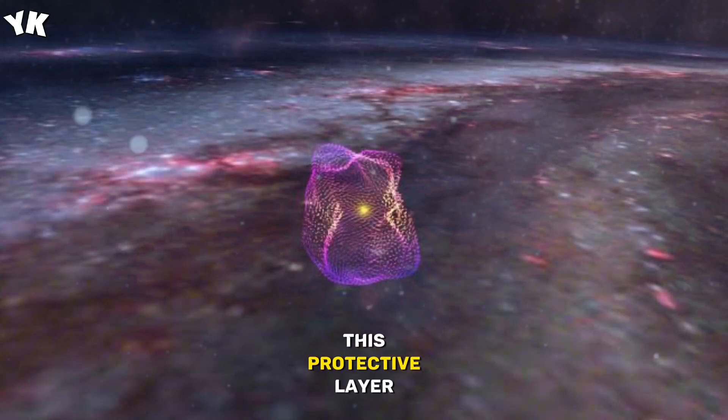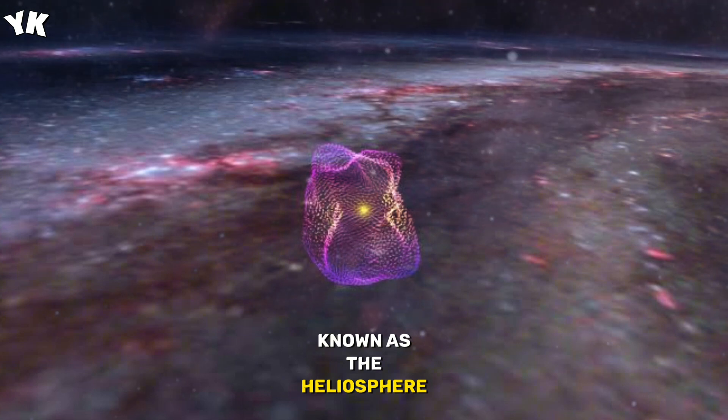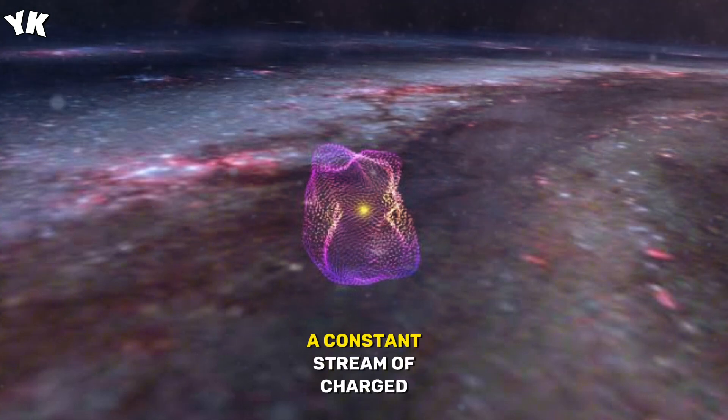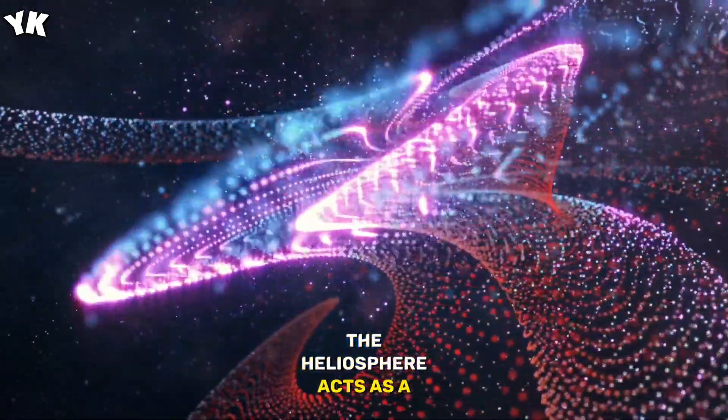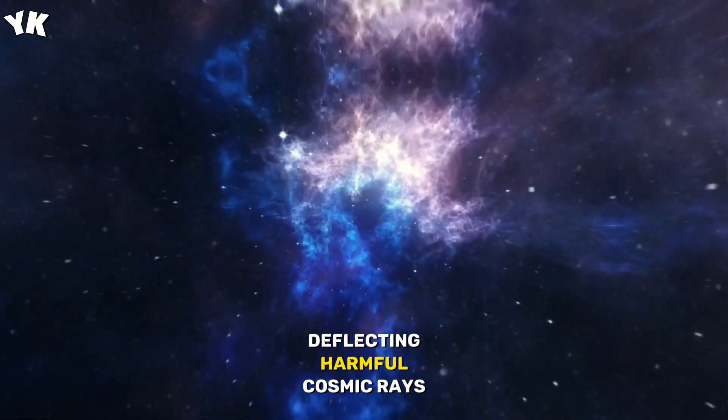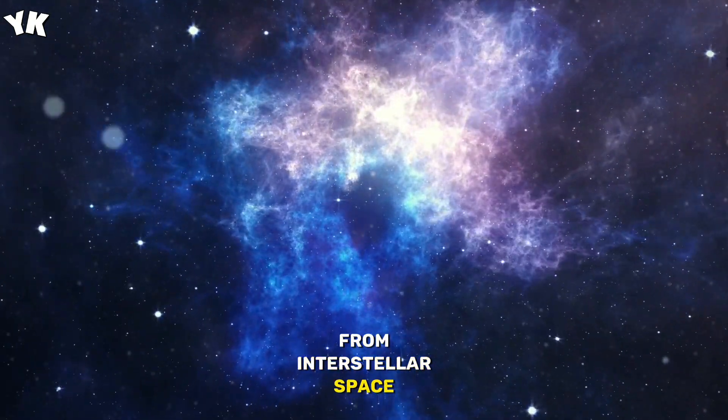This protective layer, known as the heliosphere, is formed by the solar wind, a constant stream of charged particles emanating from the sun. The heliosphere acts as a shield, deflecting harmful cosmic rays from interstellar space.